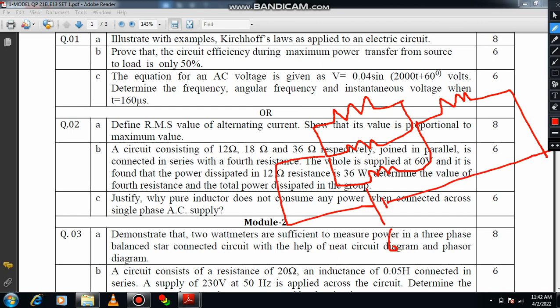Then you connect with unknown resistance and everything is supplied at 60 volt. Here you put the values: 12 ohm, then 18 ohm, 36 ohm. This is unknown resistance.